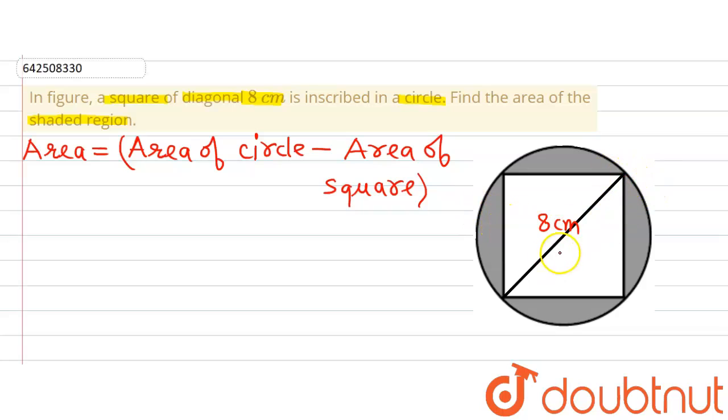It can be observed that the diameter of the circle is equal to diagonal of square. That means diameter of circle, if I assume the radius to be r, then 2r equals the diagonal of the square. Diagonal of the square is 8 cm, so radius is 4 cm.